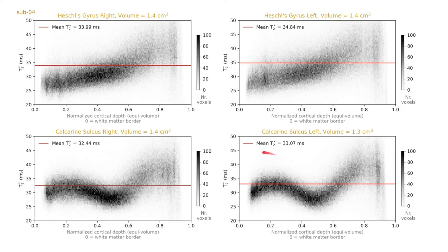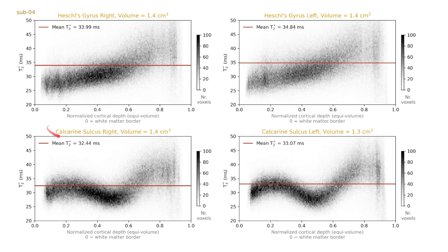Using these chunks, we investigated the T2 star behavior as a function of normalized cortical depth. In these 2D histograms, the y-axis shows the T2 star values and the x-axis shows the normalized cortical depth values. In the upper row, we can see Heschl's gyrus — right hemisphere and left hemisphere. In the lower row, we can see the calcarine sulcus — right hemisphere and left hemisphere.